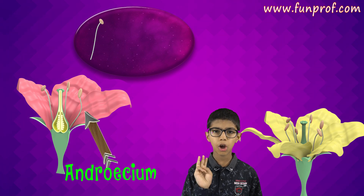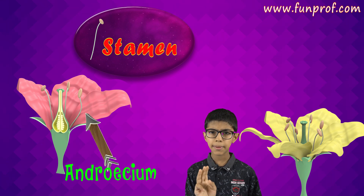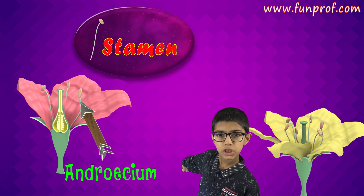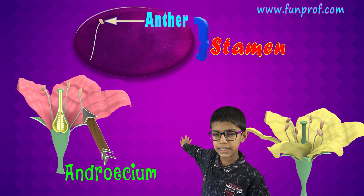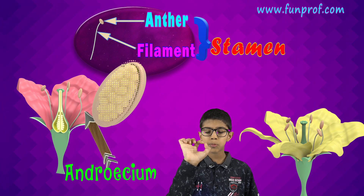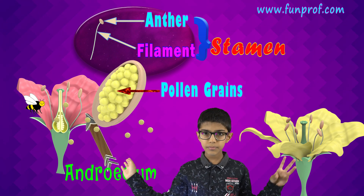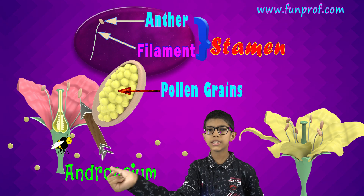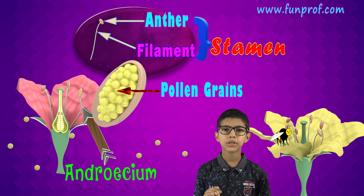Next is the androsium — it's the third wall of a flower. It consists of a group of stamens. The stamen has two parts: the anther and the filament. The anther consists of small pollen grains which, when mature, burst open and the pollen grains are set free.